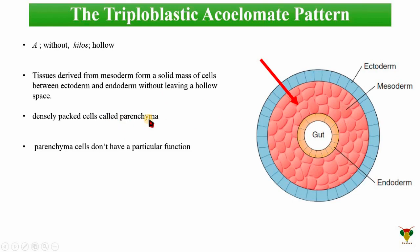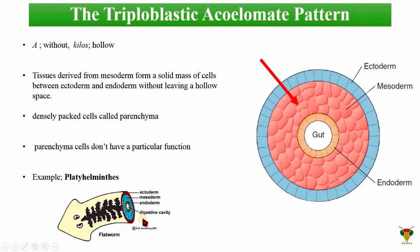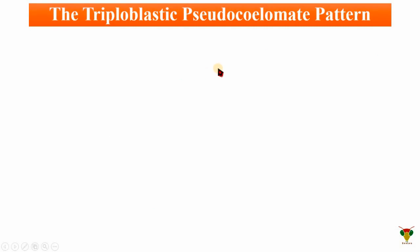These densely compact cells are actually parenchyma cells. Densely packed cells are called parenchyma cells, and they perform different functions. The example of acoelomate organisms is Platyhelminthes — the only phylum that follows the acoelomic pattern of triploblastic organization. In the diagram, ectoderm is present, then endoderm, and in the middle mesoderm is present but without a body cavity or hollow space. In the center, there is a hollow space which is the digestive cavity.